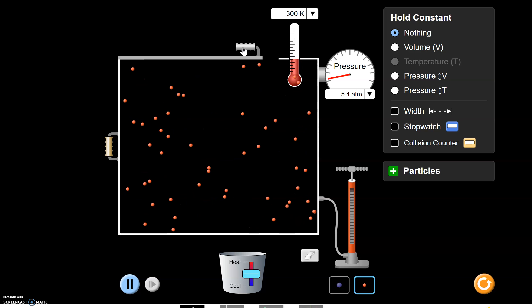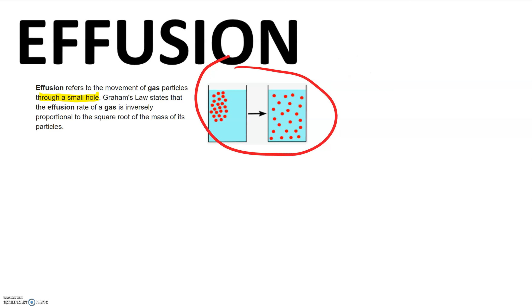We'll do a lab that kind of assesses this, but let's get a look at the mathematical relationship. If effusion is the rate at which gases leave, we could say that it is inversely proportional to their mass. But in the case of calculating the root mean square velocity, the square root of the mass is more applicable. So here's how this works.